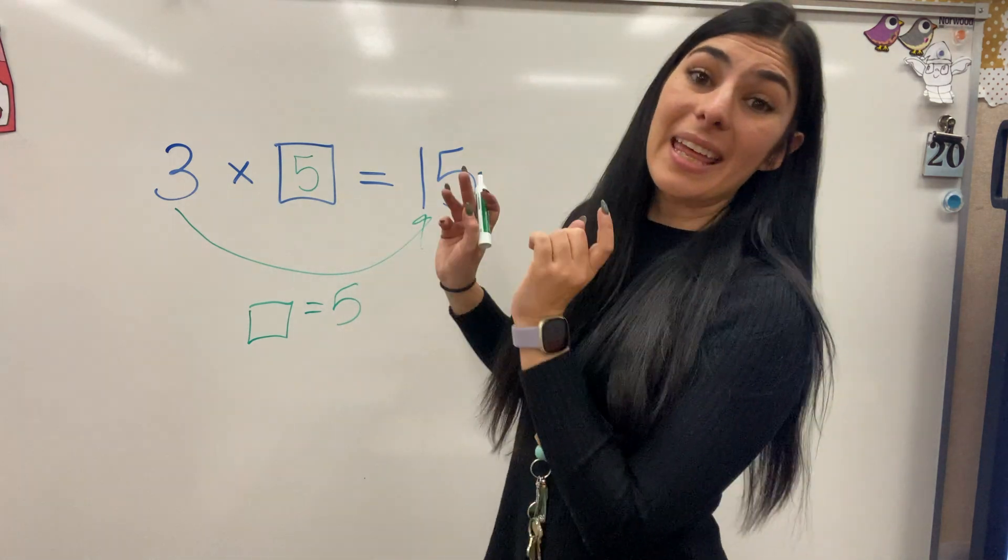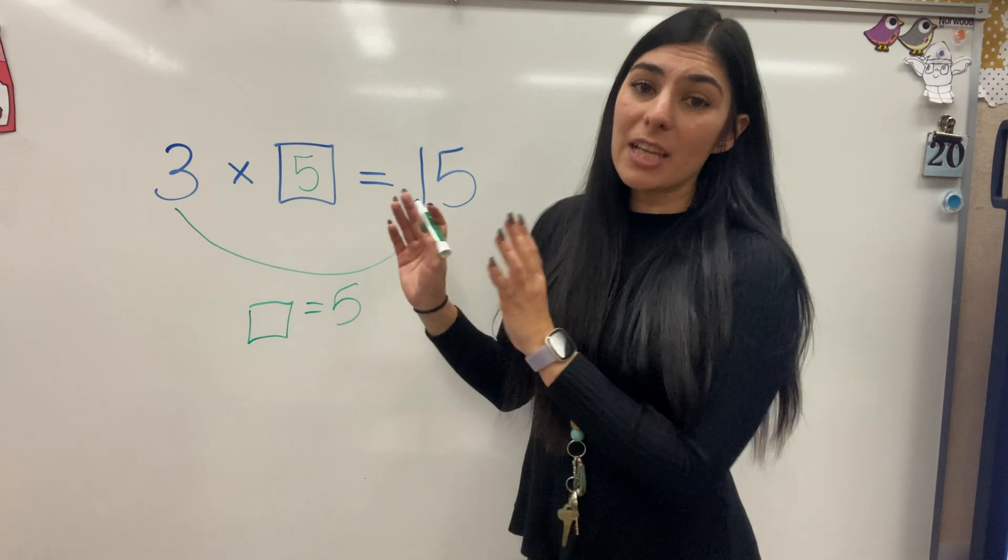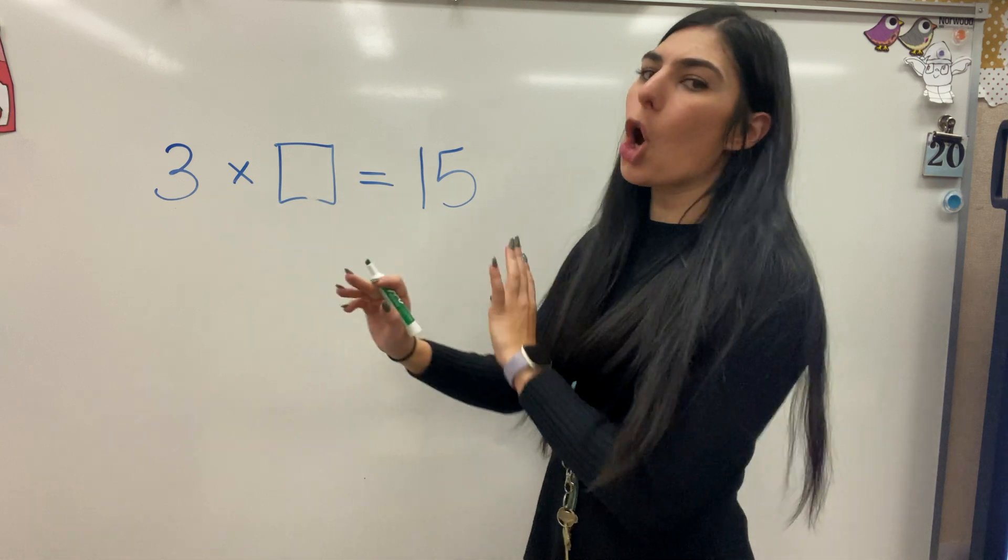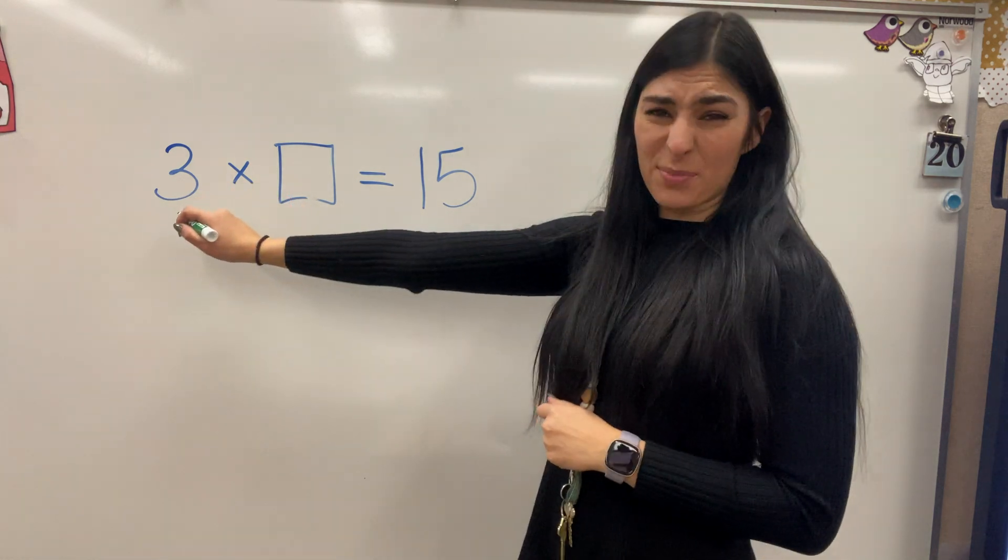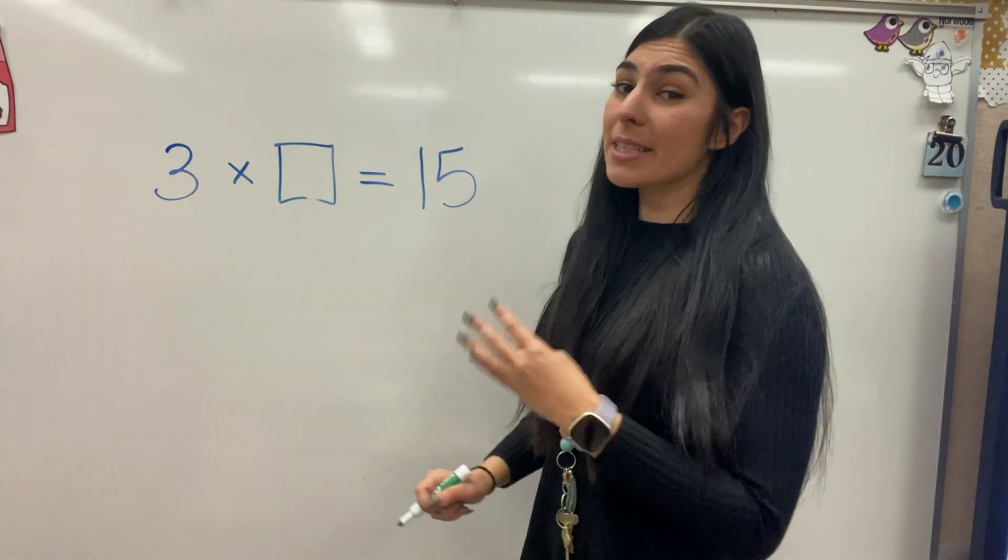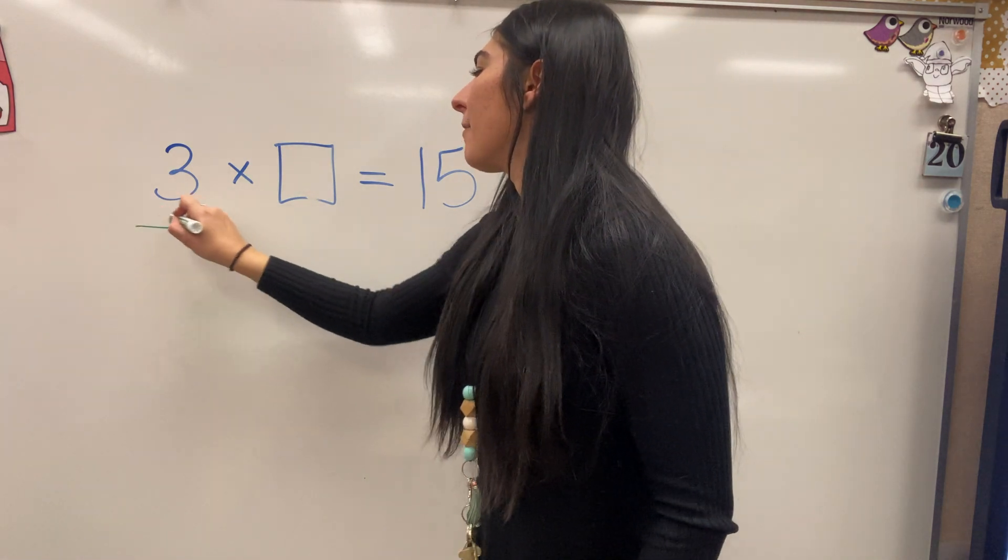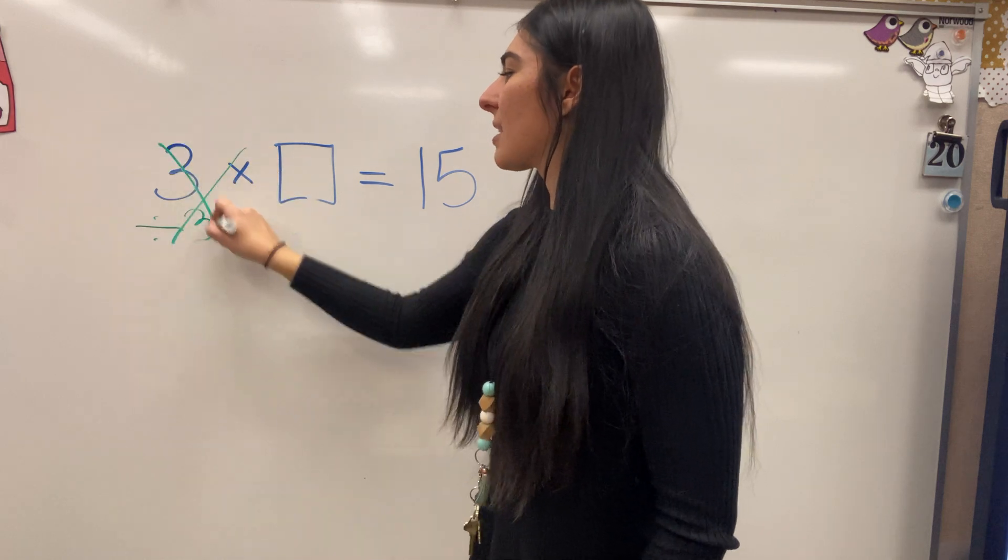Now, the other way, if you're not doing skip counting, is you can do the opposite. So this means what I want to do is get this box all by itself, which means I need to get rid of that 3 times. So what is the opposite of multiplication? Division. So I'm going to divide by 3, which cancels this out.